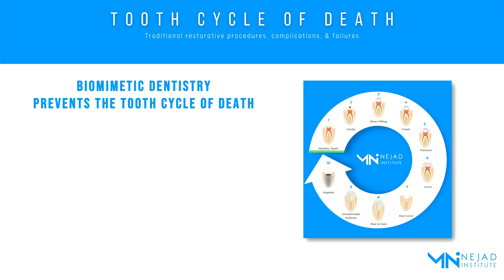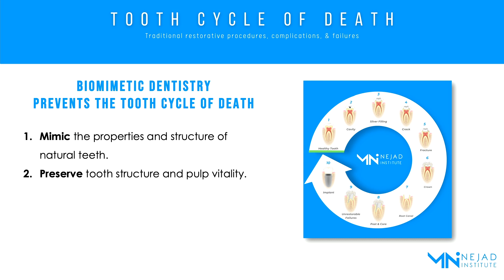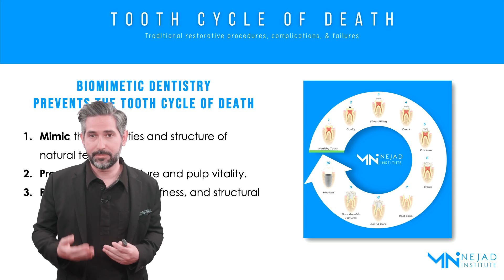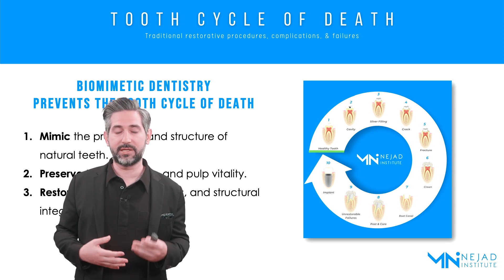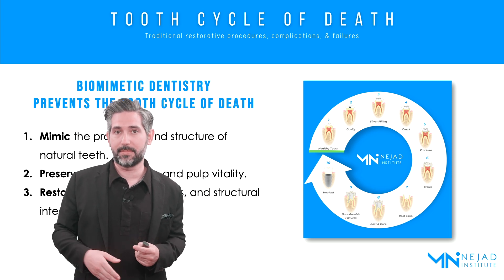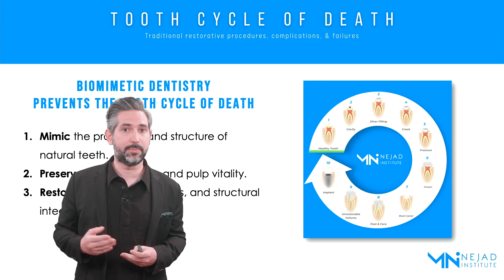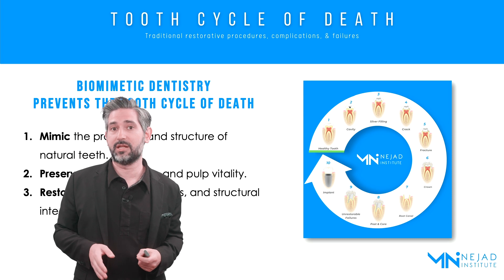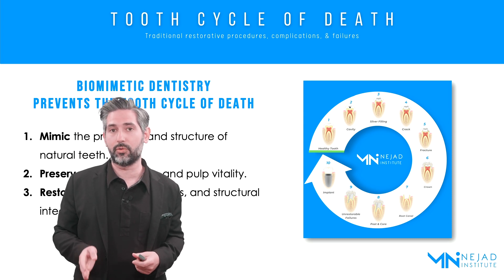Biomimetic dentistry prevents the tooth cycle of death through three major pillars applied to every restoration. One: mimic the properties and structure of natural teeth. Two: preserve tooth structure and pulp vitality. Three: restore the strength, stiffness, and structural integrity of the intact natural tooth. When you apply biomimetic dentistry — mimicking the tooth, preserving intact tooth structure, and regaining the strength and stiffness of a natural intact tooth — you dramatically minimize the occurrence of these complications. The tooth cycle of death can be prevented in a large majority of cases, which is good for patients and dentists alike, and is why biomimetic dentistry is the most logical choice for all restorative dentistry.